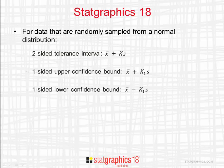For one-sided confidence bounds, you take the sample mean either plus a multiple of S in the case of an upper confidence bound, or minus a multiple of S in the case of a lower confidence bound.